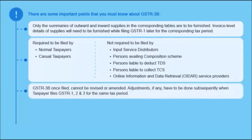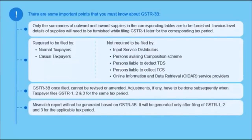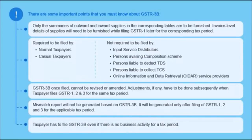GSTR 3B once filed cannot be revised or amended. Adjustments, if any, have to be done subsequently when the taxpayer files GSTR 1, 2 and 3 for the same tax period. Mismatch report will not be generated based on GSTR 3B; it will be generated only after filing of GSTR 1, 2 and 3 for the applicable tax period. The taxpayer has to file GSTR 3B even if there is no business activity for a tax period. This completes the introduction to GSTR 3 and GSTR 3B.